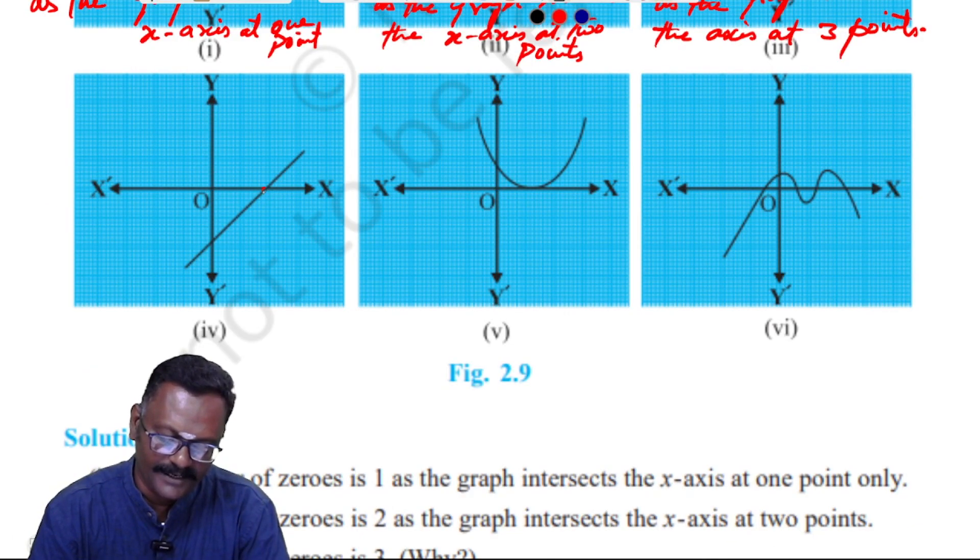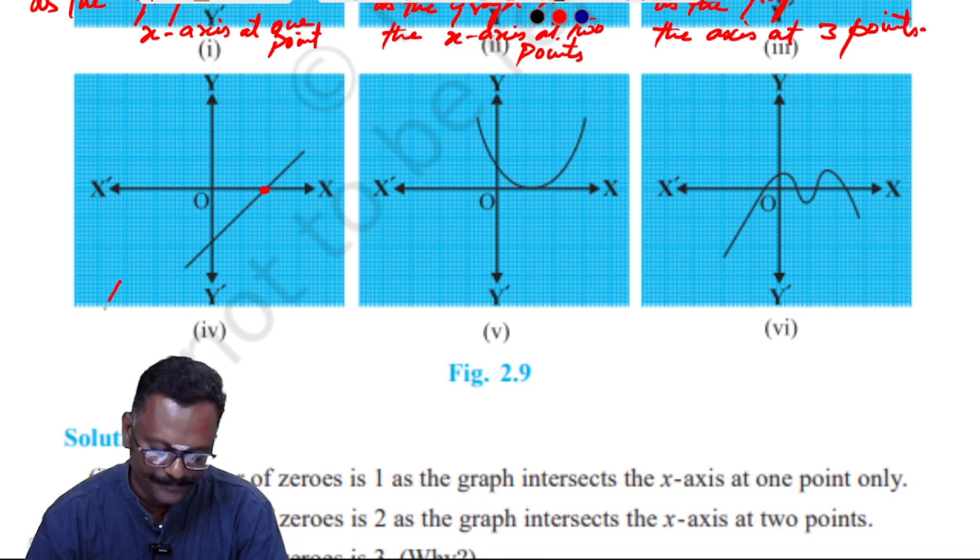Now I am going to talk about the graph, the fourth one. For the fourth subdivision, the number of zeros is 1.